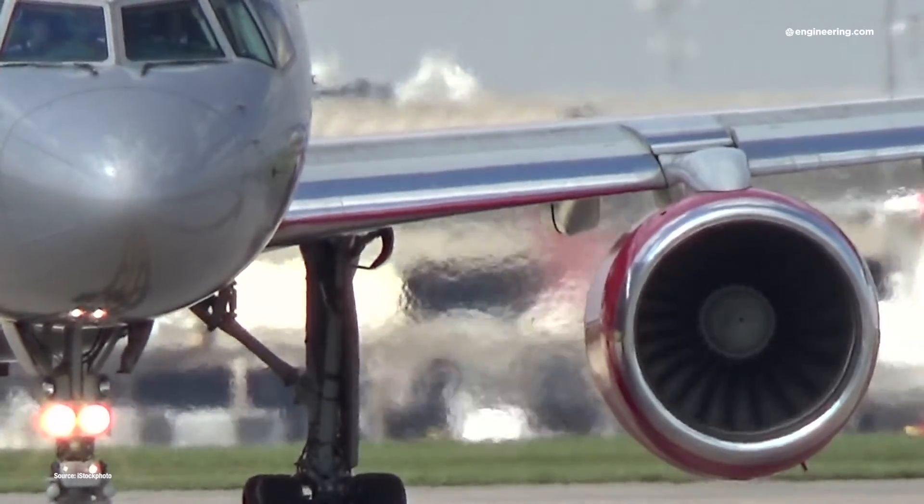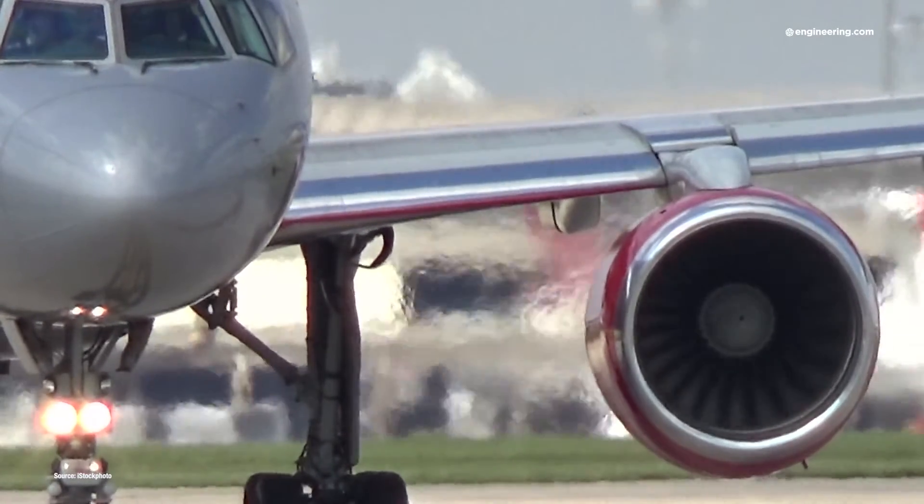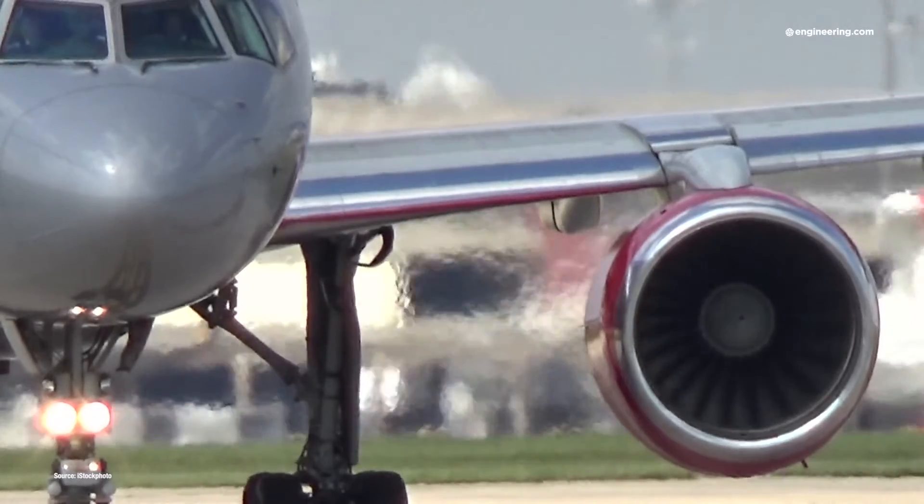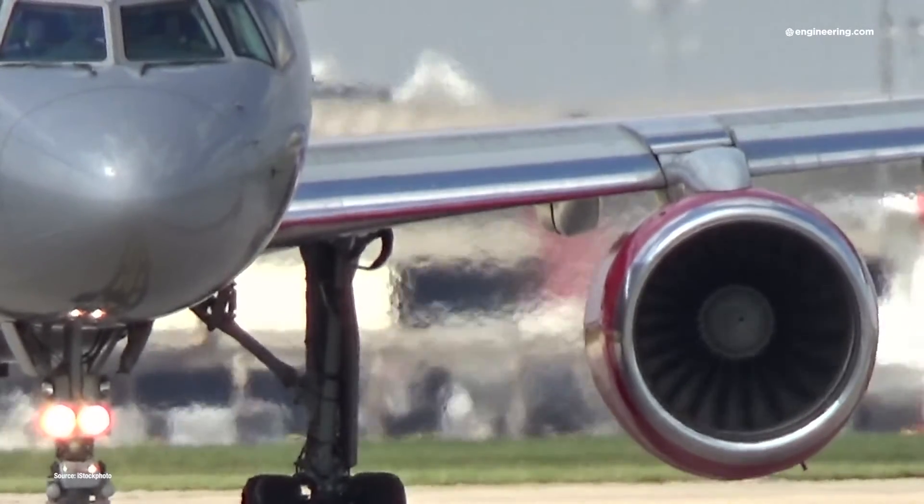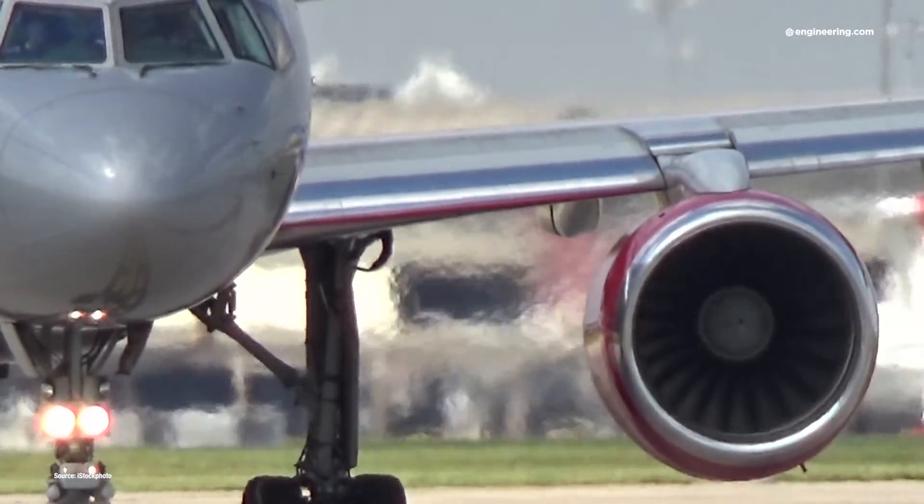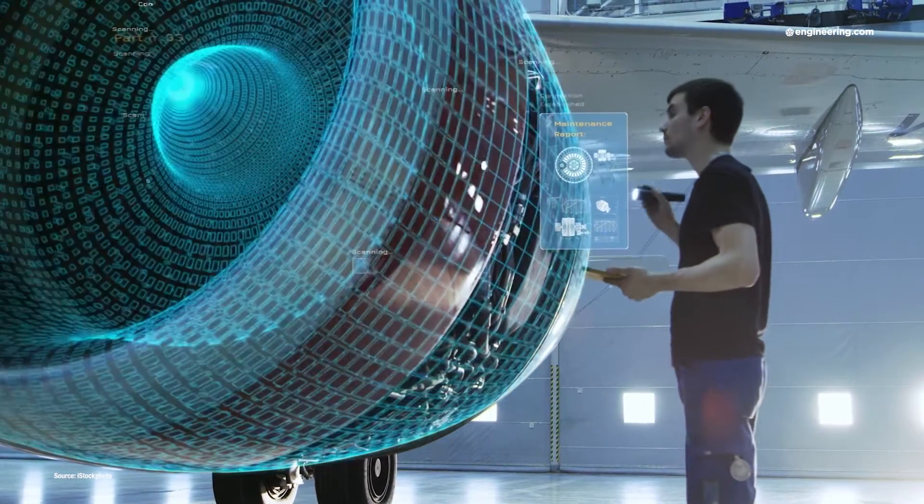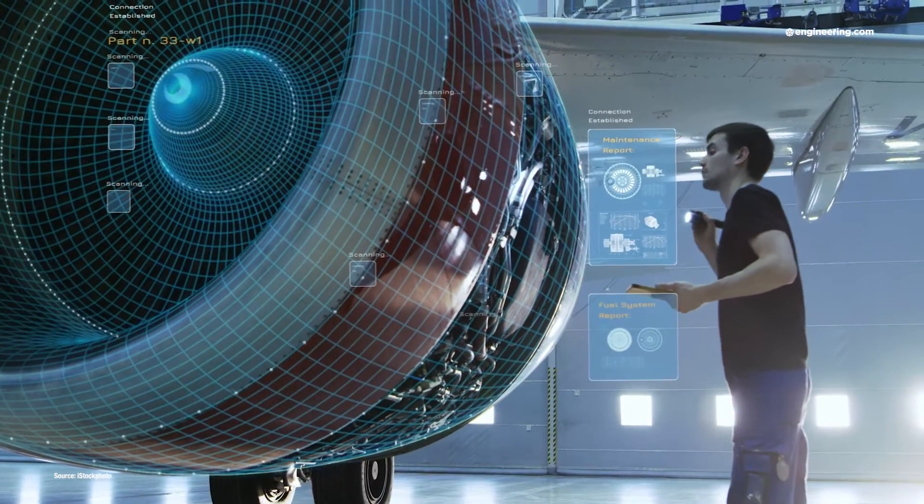In a jet engine, for example, efficiency is everything, and the most efficient engines, as all first year engineering students learn, operate with the highest delta T between combustion temperature and ambient. To make the perfect jet engine, engineers need materials that can withstand temperatures that will melt conventional alloys.